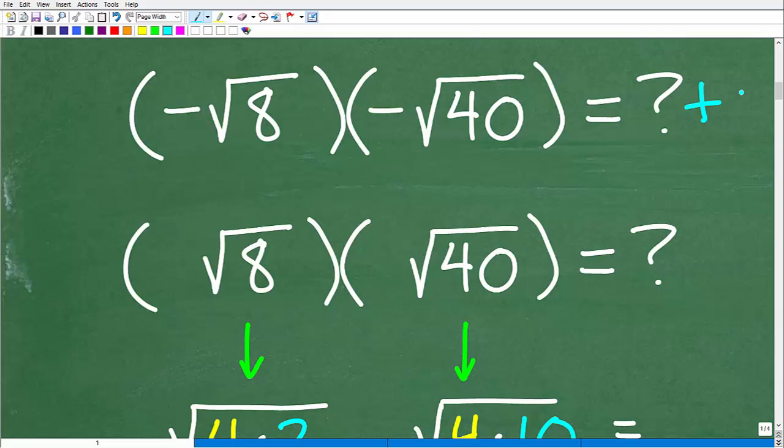We know our answer is going to be positive, so we could just disregard the negative signs at this point in the problem and just think of the problem as square root of 8 times the square root of 40.